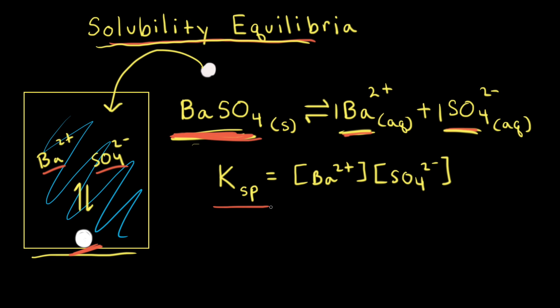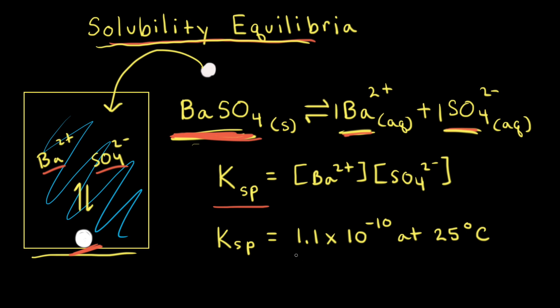Ksp indicates how much of a salt will dissolve. For example, at 25 degrees Celsius, the Ksp value for barium sulfate is 1.1 times 10 to the negative 10th. When the Ksp value is much less than one, that indicates the salt is not very soluble, so barium sulfate is not a soluble salt. If the Ksp value is greater than one, like it is for something like sodium chloride, that indicates a soluble salt that dissolves easily in water.